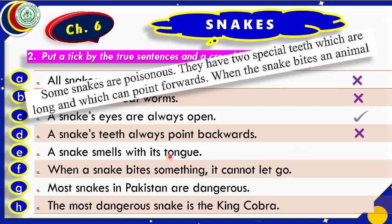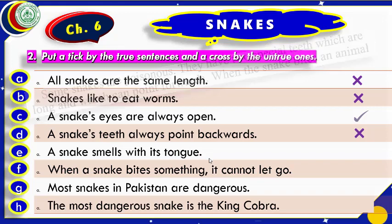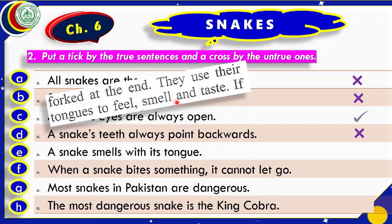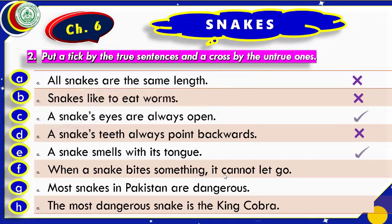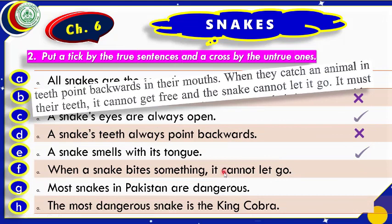'A snake smells with its tongue.' Yes, that is correct — a snake uses its tongue to feel, smell, and taste. 'When a snake bites something it cannot let it go.' Yes, this is also correct — when they catch an animal in their teeth, it cannot get free and the snake cannot let it go. This is due to the backward-pointing teeth. This is a true statement.